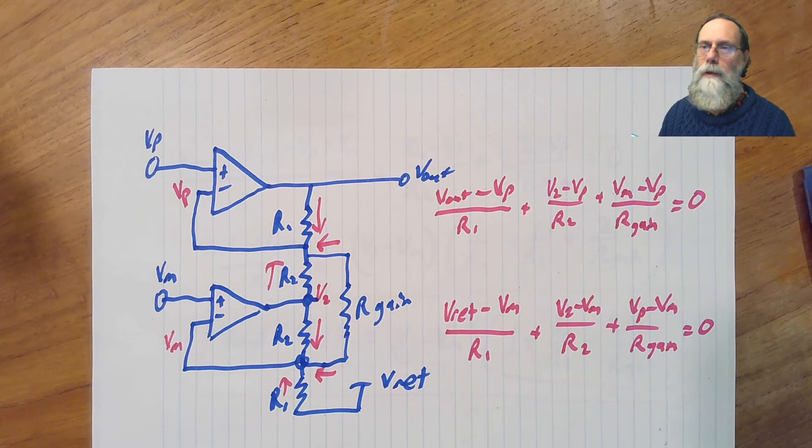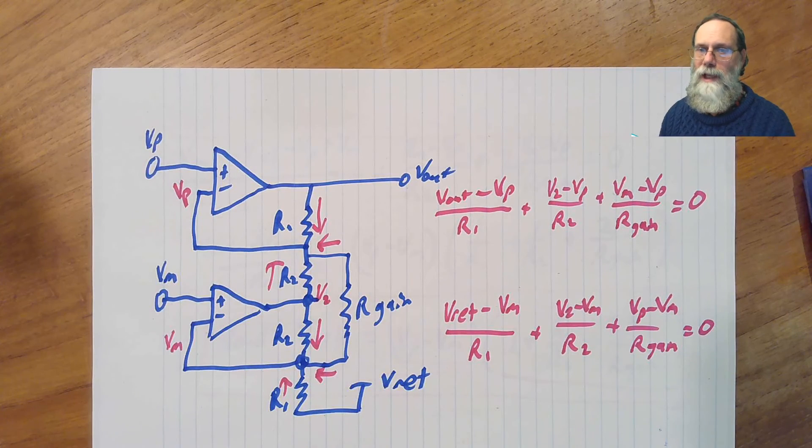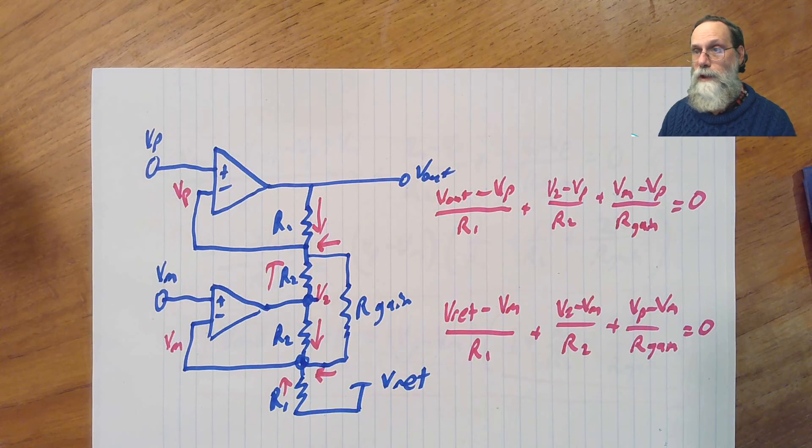But as long as you keep your common mode signal small so that it's basically the average of these two signals is staying halfway between your power rails or staying close to V-Ref, actually, you're in pretty good shape.